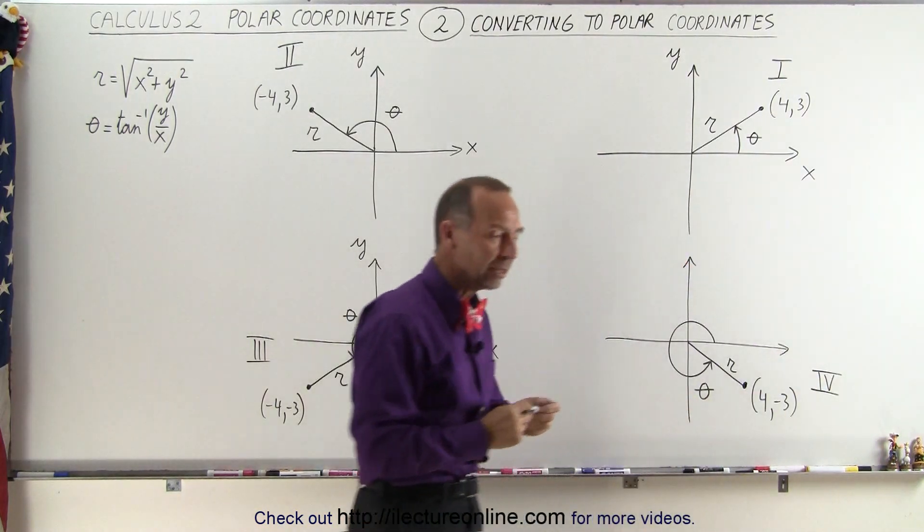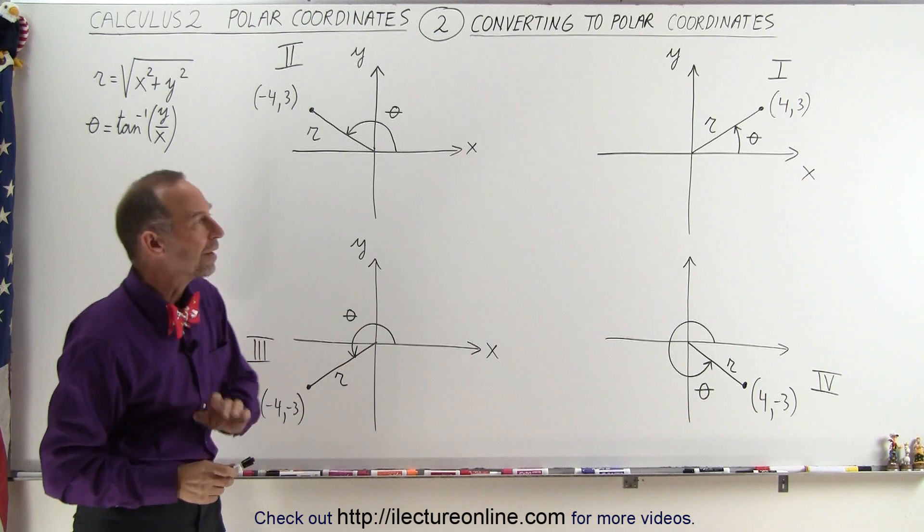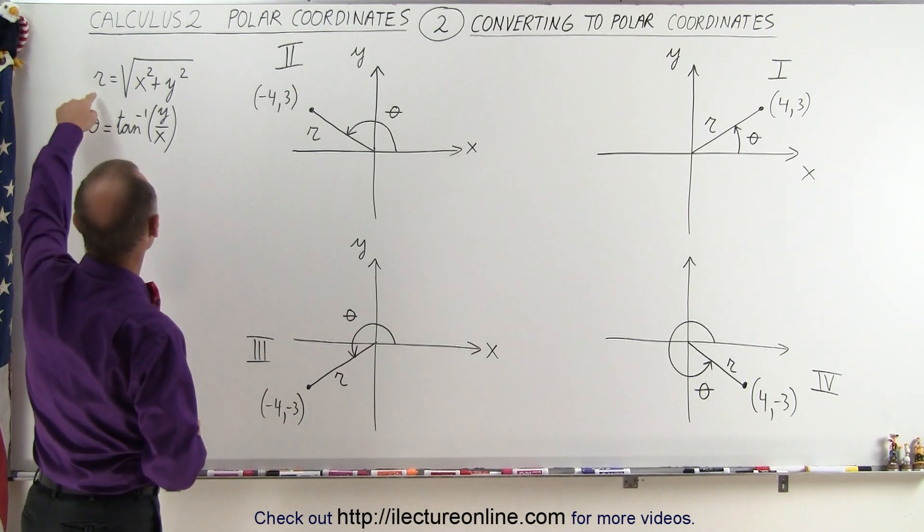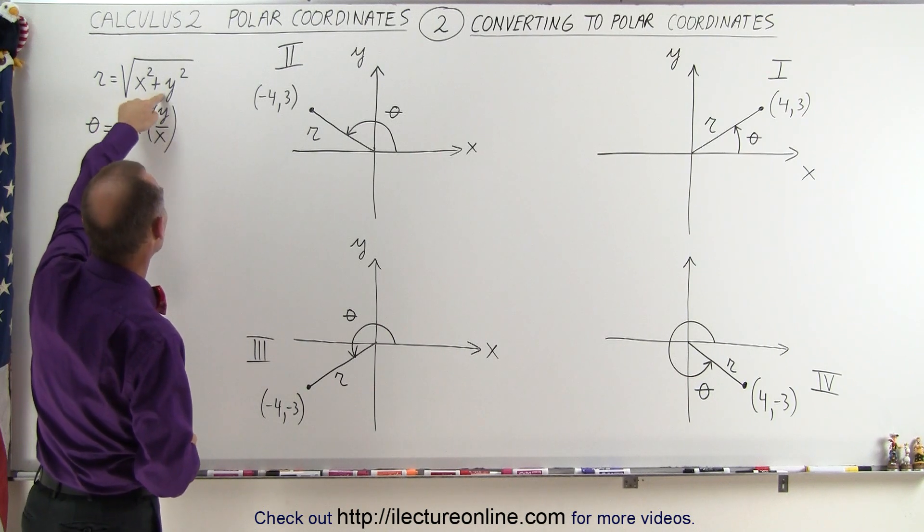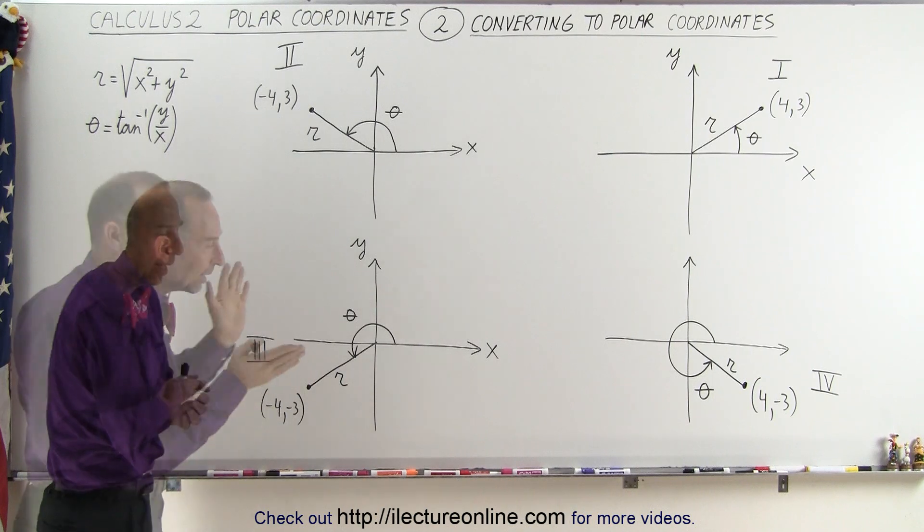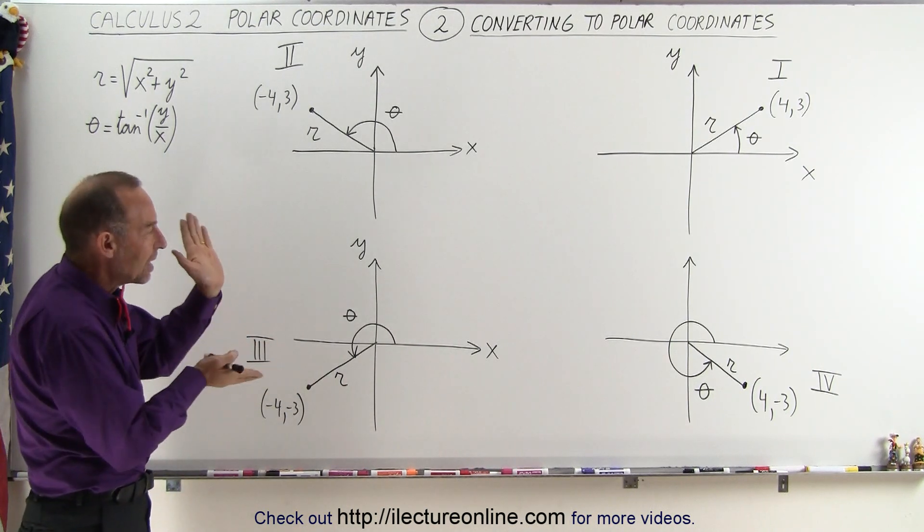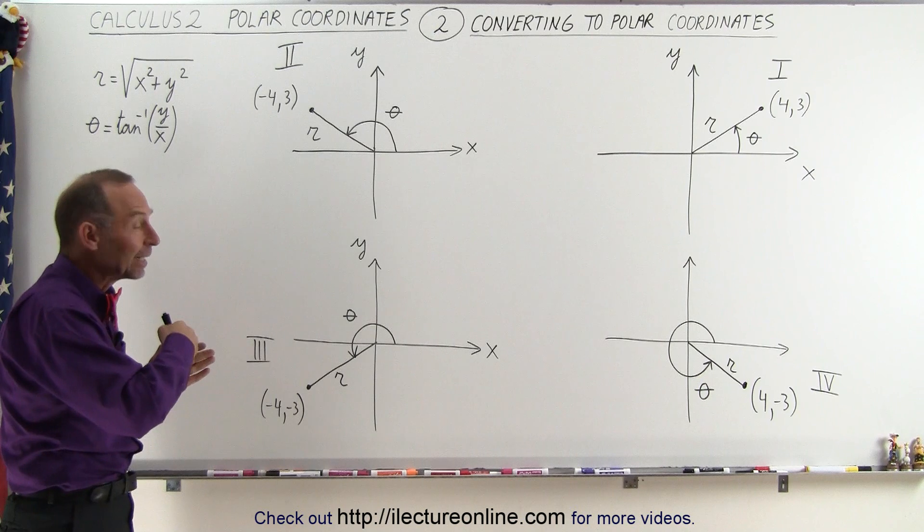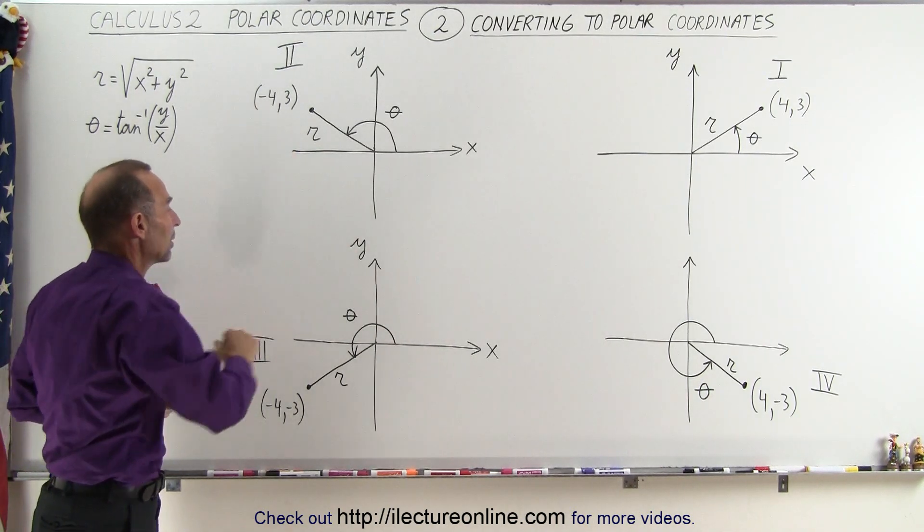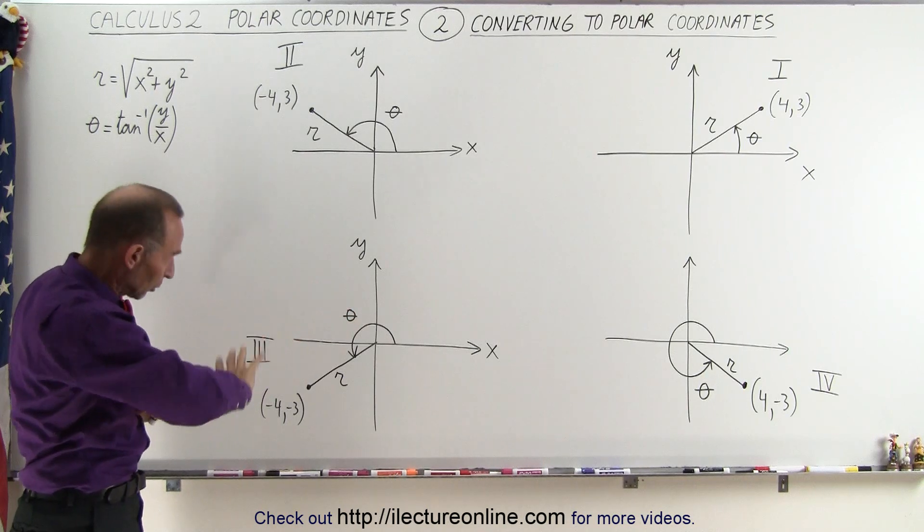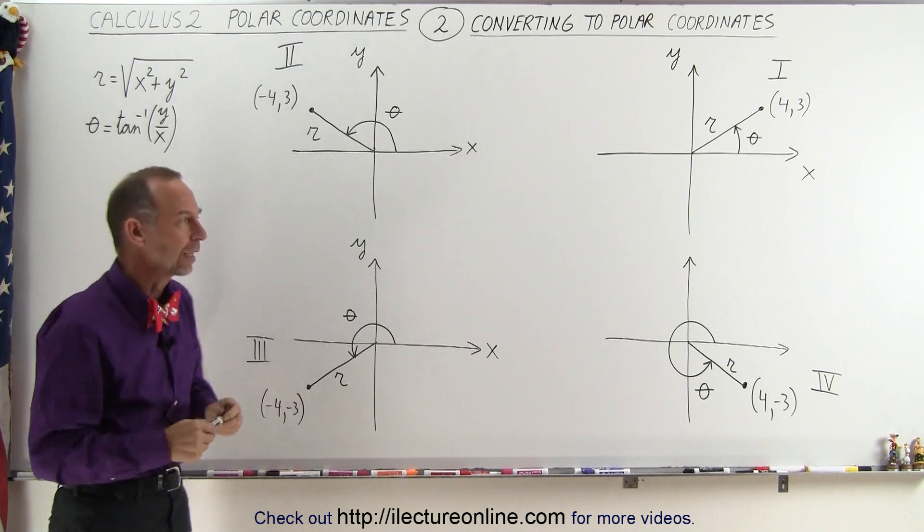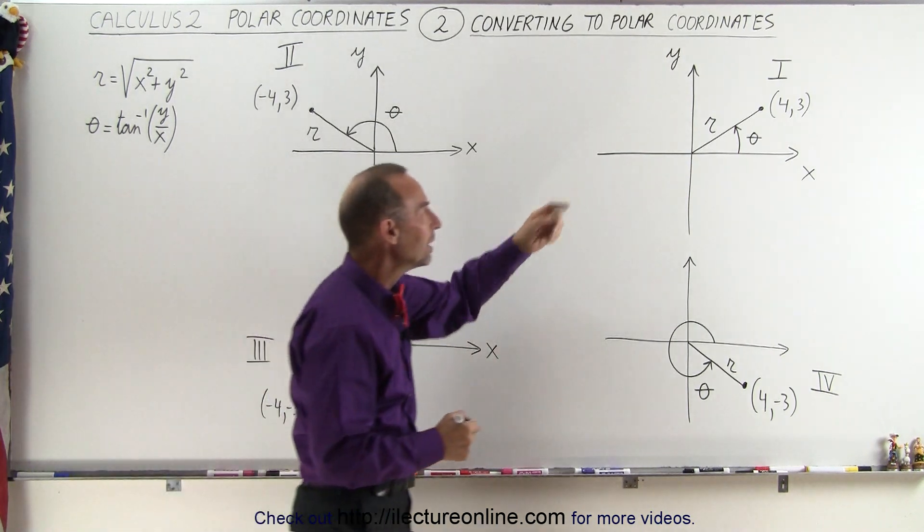So when we use calculators, we have to be a little bit careful about the sign when we find the angle. Finding r is quite easy because all we have to do is take the square root of x squared plus y squared. But since we have to take the inverse tangent, and the tangent is typically hemmed into being an angle between minus 90 and plus 90 degrees, we have to be careful about how we handle quadrant 3 and quadrant 4, and even quadrant 2.